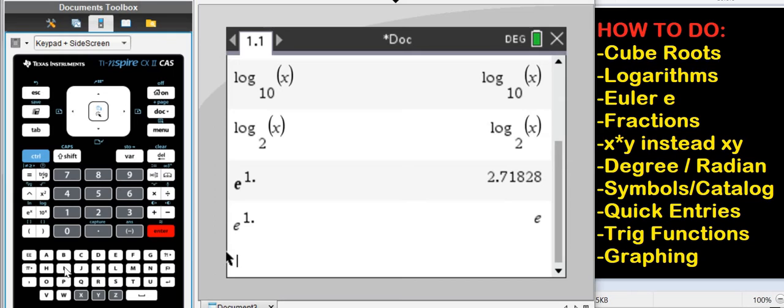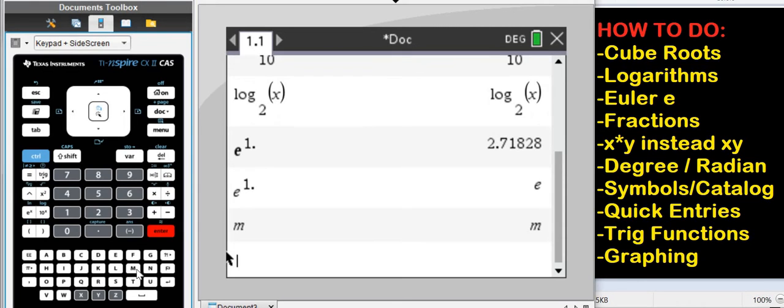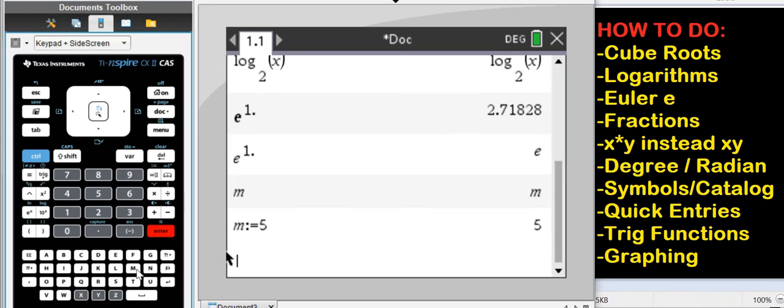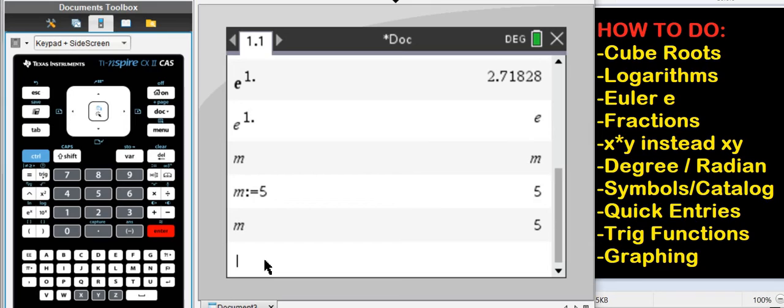So all of these letters down here are constants. Like if you put an M, that's a constant. You can assign a value to M if you want. You can do it like that. M is defined as 5. So now, notice the M is bold and has a value 5. And then you can use that throughout.